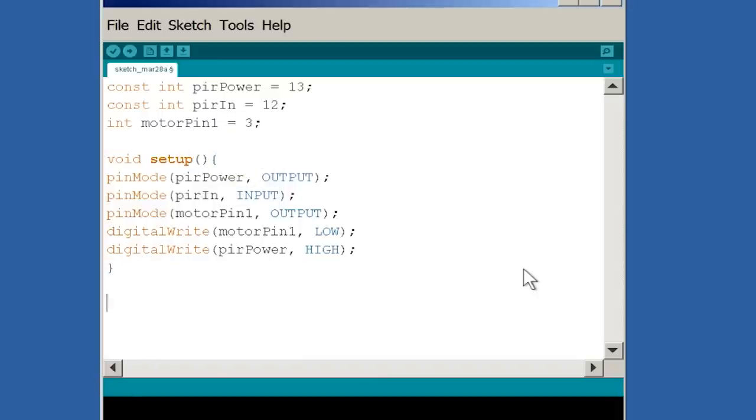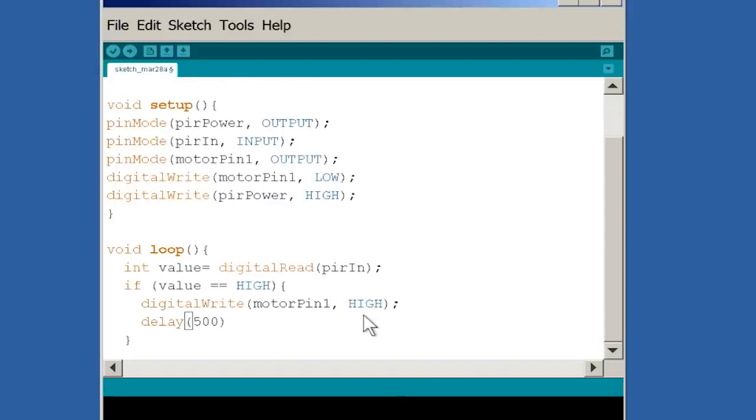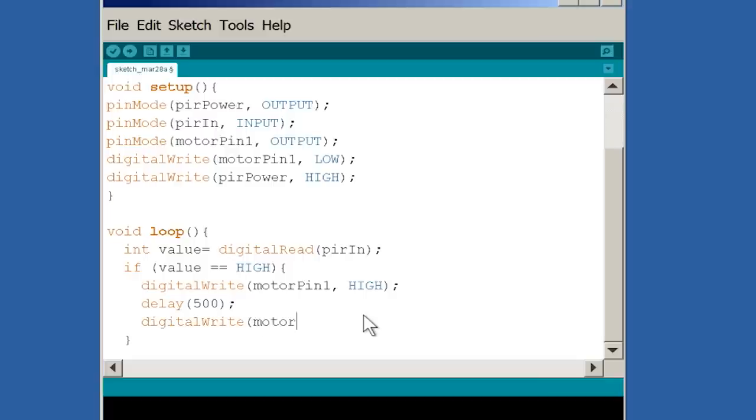Ok, for the action part, let's make a loop that reads the output from the motion sensor and if it's high, then send a power signal to the motor pin. Let's keep it running for a few seconds and then let's set the power back to low.